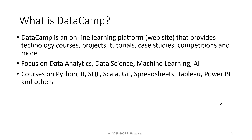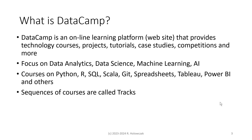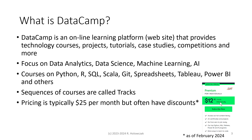There are courses on Python programming, R programming, SQL, Scala, Git, Spreadsheets, Tableau, Power BI, and many others. Sequences of courses are called tracks. Pricing is typically $25 per month, but often there are discounts.